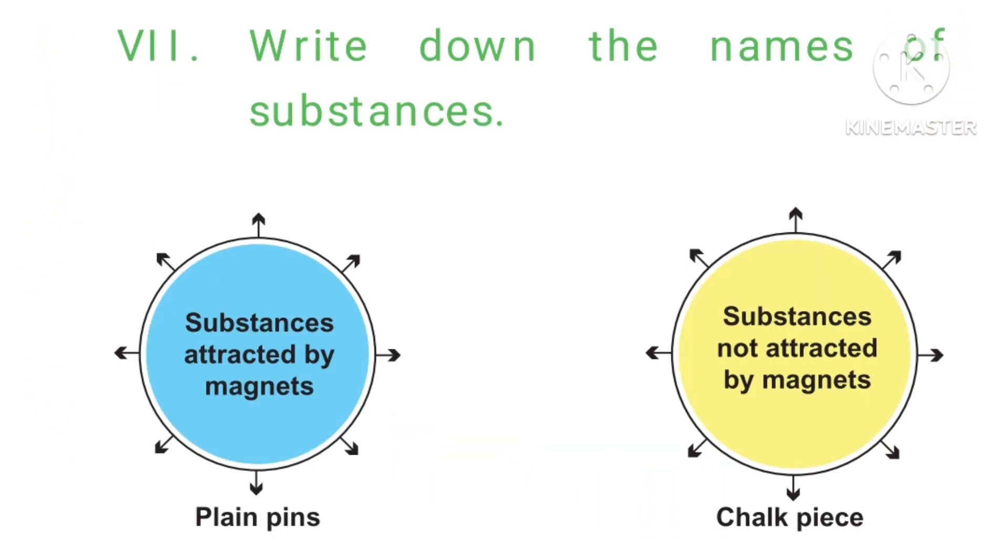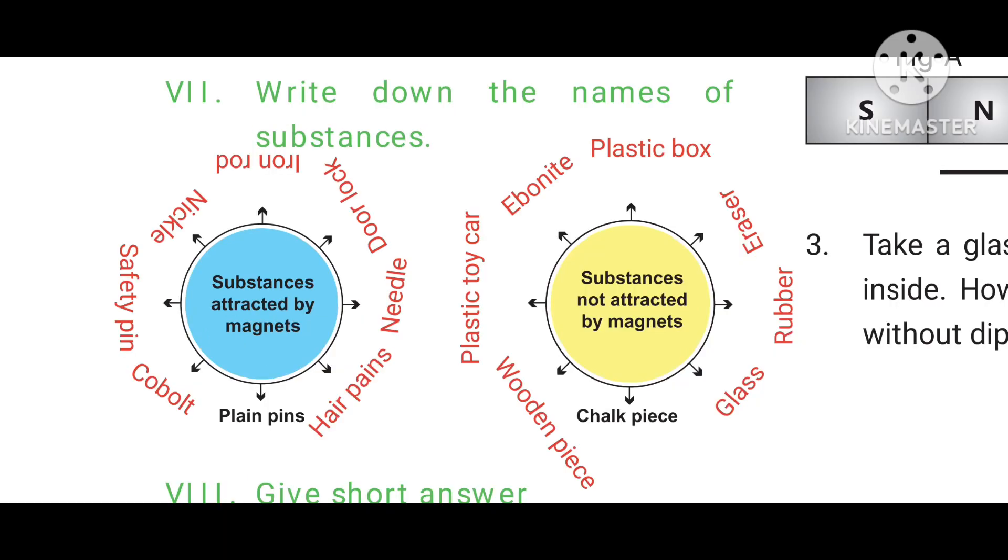Roman letter 7. Write down the names of substances. First picture: Substances attracted by magnets. Which object is attracted by a magnet? The first example: Plain pins, hair pins, needle, door lock, iron rod, nickel, safety pin, cobalt.